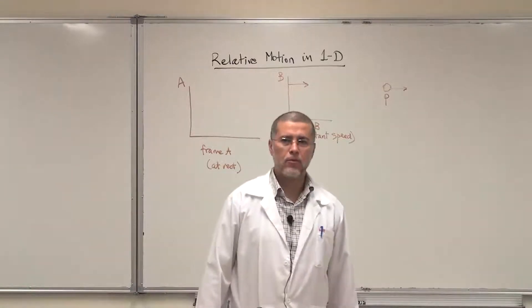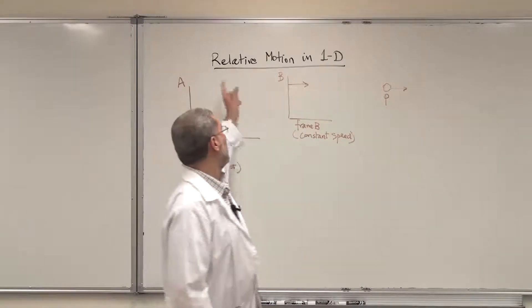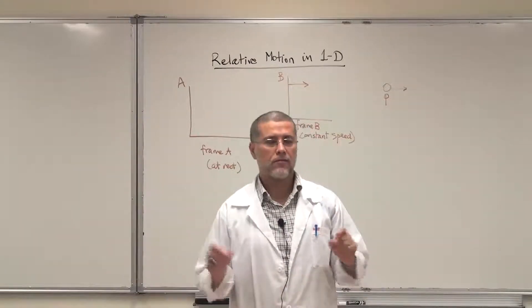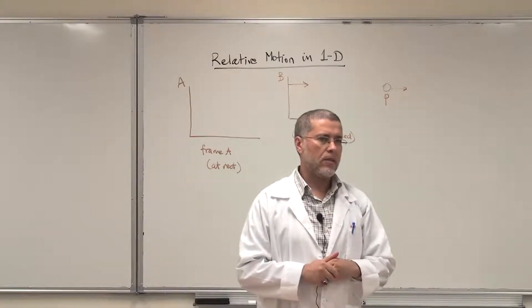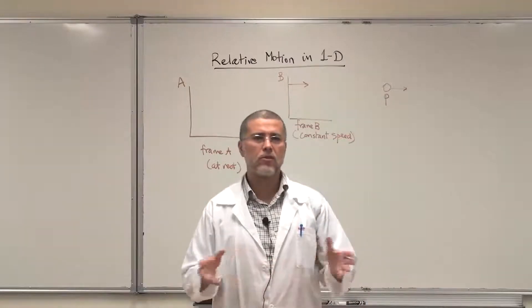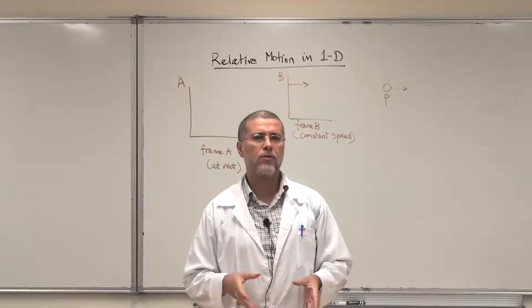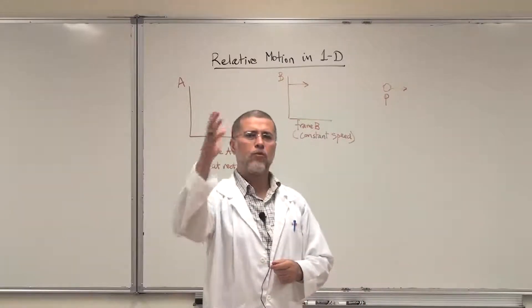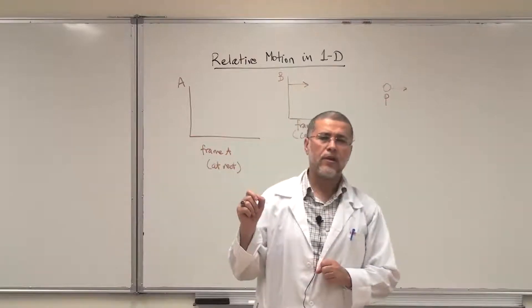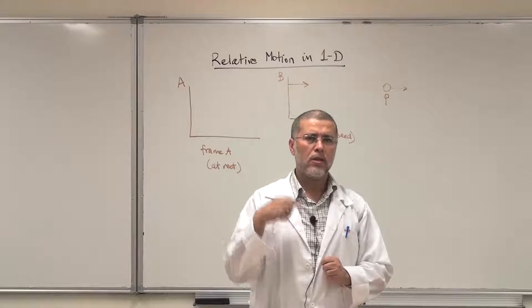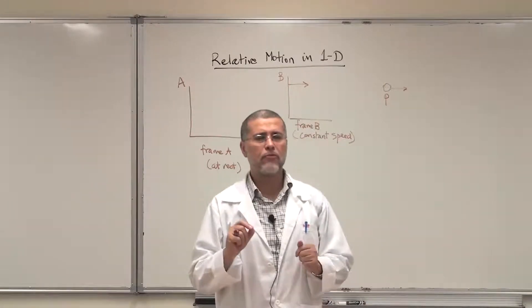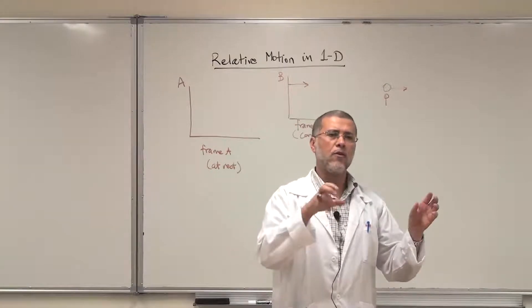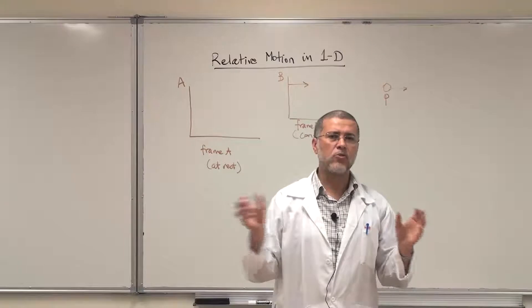Bismillah ar-Rahman ar-Rahim. Today we are going to discuss relative motion in one dimension. Let me give you an example of relative motion — specifically, we are going to talk about relative velocity. Imagine you are driving your car at 100 km per hour. This is your velocity with respect to the ground. If somebody on the ground measures your velocity, they will get 100 km per hour.